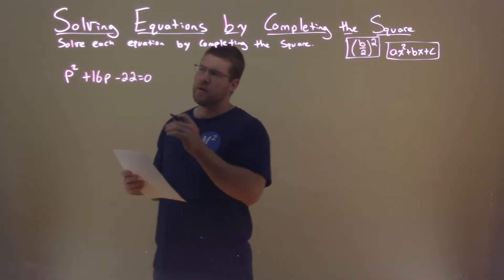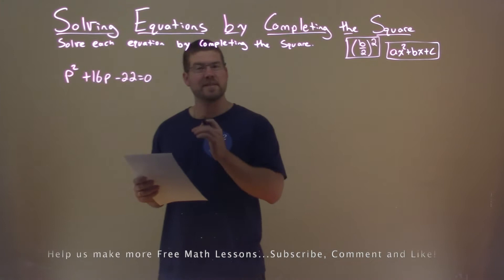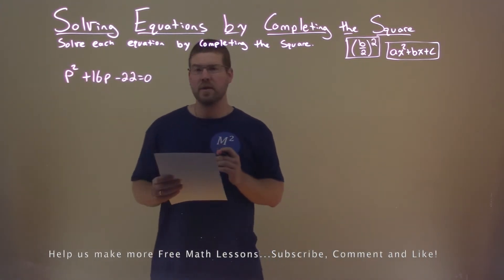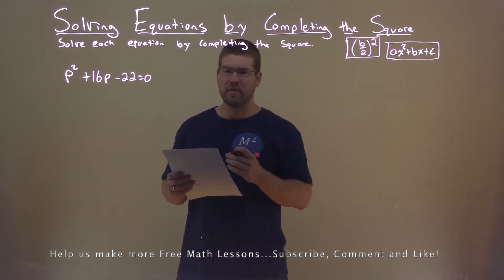We're given this problem right here, p squared plus 16p minus 22 equals zero, and we need to solve this by completing the square.